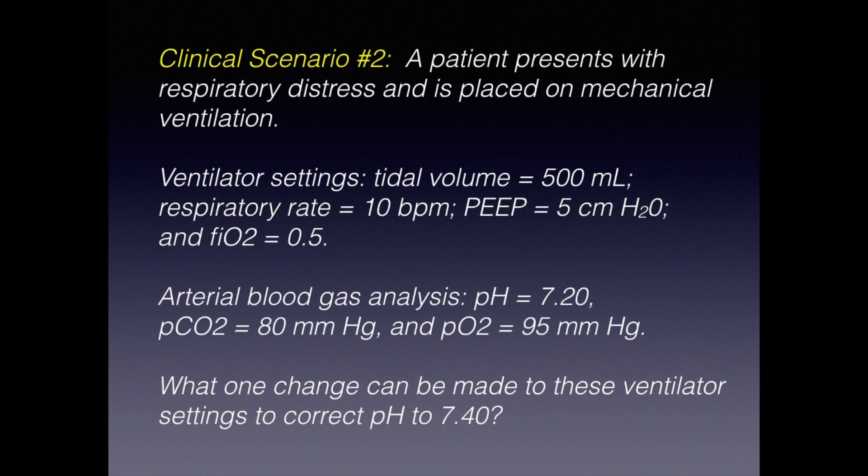We are now ready to address one more clinical problem and to wrap up this lesson. A patient presents with respiratory distress and is placed on mechanical ventilation. The ventilator is set to deliver tidal volume of 500 mLs at a respiratory rate of 10 breaths per minute, with 5 cm of water positive end expiratory pressure, and an inspired oxygen concentration of 50%. Arterial blood gas analysis shows pH equals 7.20, pCO2 equals 80 mmHg, and pO2 is fine, it's 95 mmHg. The question is, what one change can be made to these ventilator settings to correct the pH to 7.40?